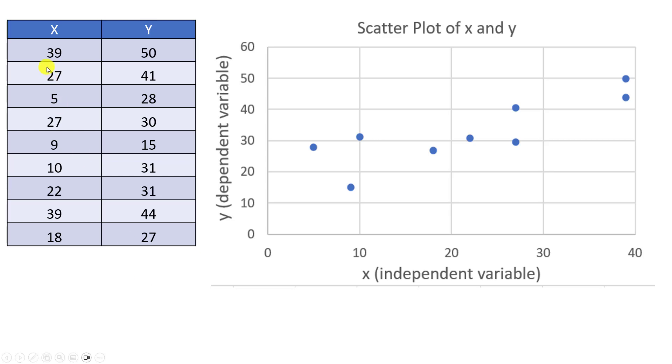For example, to find the first point (39, 50), we can go 39 out in the x direction and 50 up in the y direction, and then we will plot a point.